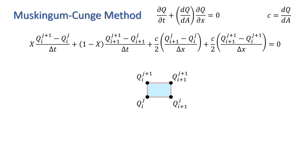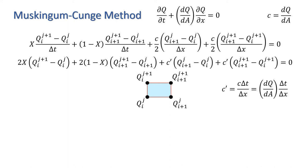Multiplying our finite difference equation throughout by 2·delta t, we have this expression, where c' is a non-dimensional parameter defined as c·delta t over delta x, or dq by dA times delta t over delta x.